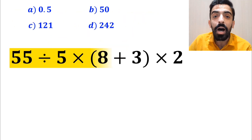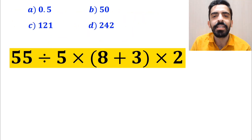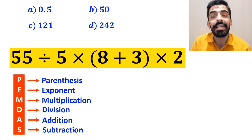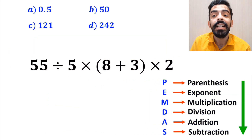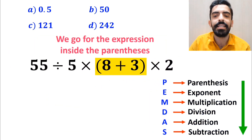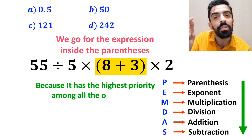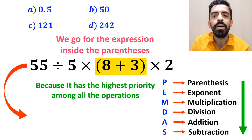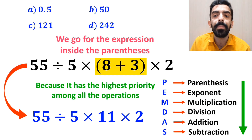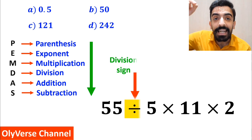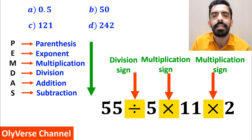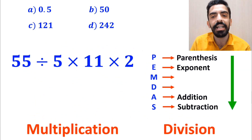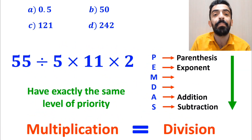Now let me explain step by step how to solve this expression properly. To solve this question, we must follow PEMDAS, which shows us the priority of the order of operations. The first step is to go for the expression inside the parentheses, since it has the highest priority. So we can write 55 divided by 5 times 11 multiplied by 2. In this expression, we have one division sign followed by two multiplication signs, and multiplication and division have exactly the same level of priority in PEMDAS.